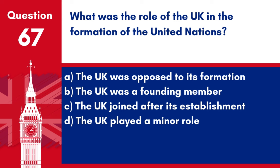Question 67. What was the role of the UK in the formation of the United Nations? A. The UK was opposed to its formation. B. The UK was a founding member. C. The UK joined after its establishment. D. The UK played a minor role. Answer: B. The UK was a founding member. The UK played a significant role as a founding member in the formation of the United Nations.